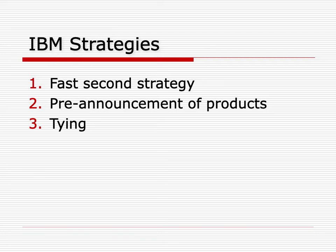Tying — selling different products together at a single price, sometimes called bundling — was another strategy. IBM required that purchasers of a computer also automatically pay for a service contract. Initially, they wouldn't even sell the computer; they rented it only. So the service appeared free, with marginal cost of zero. The problem is that no independent service network develops — all the technicians work for IBM. While smaller, newer firms could have been served by an independent service agency, by not having those exist, it made it more difficult for them. Only IBM had access to its own service network, creating a barrier to entry.